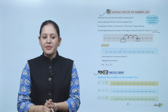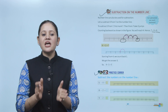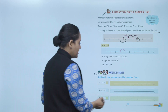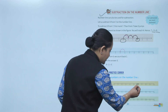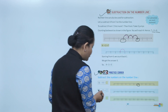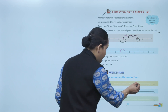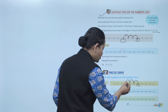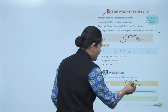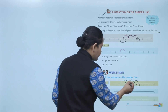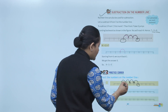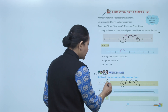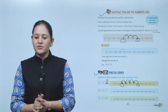Next, practice corner — subtract on the number line. Here we have to subtract: 6 minus 4. Start at number 6, subtract 4, so we move 4 places backward: 1, 2, 3, and 4. We reach number 2. So 6 minus 4 equals 2.